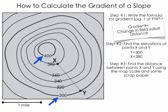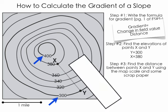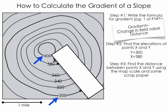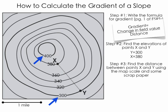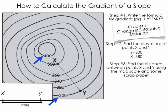So the next step would be to find the distance between points X and Y using the map scale and some scrap paper. So you'll bring your scrap paper in, line it up with the XY line, and mark off where X is, and then mark off where Y is. And you take your scrap paper and you move it down along the map scale in the bottom left corner. In this case, it looks like X and Y are exactly one mile away from each other.